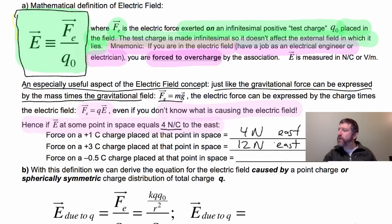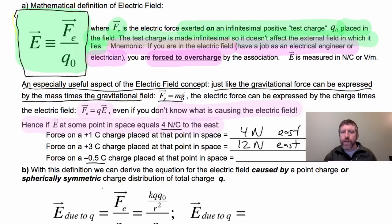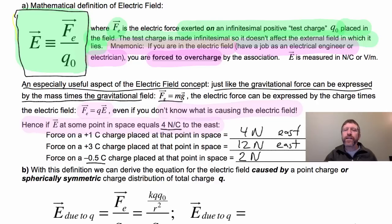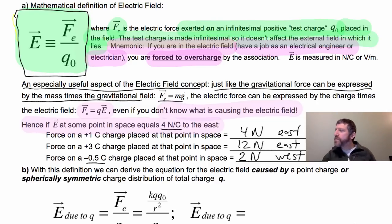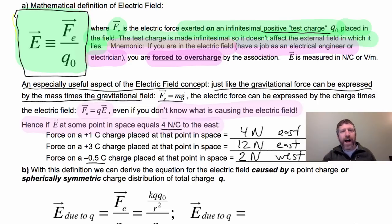What if we put a negative 0.5 coulomb charge in that same field? The magnitude is 4 newtons per coulomb times 0.5 coulombs = 2 newtons, but because it's a negative charge, negative charges are affected oppositely — that force will point west. Notice that the test charge Q₀ is positive, so the field is defined by the direction and magnitude of force on a positive test charge.